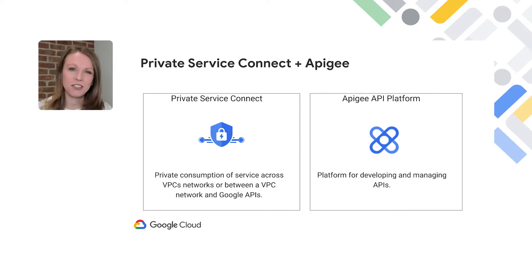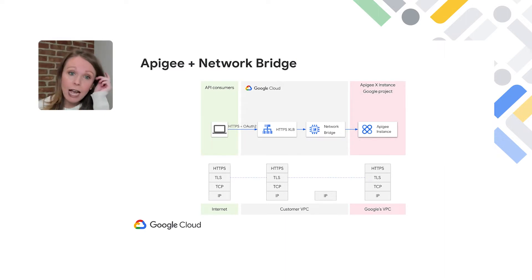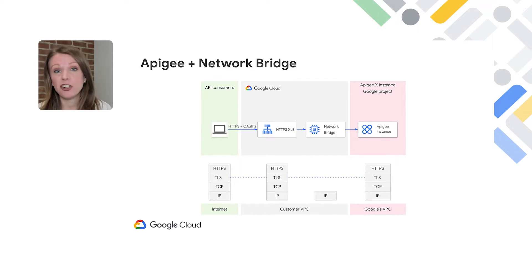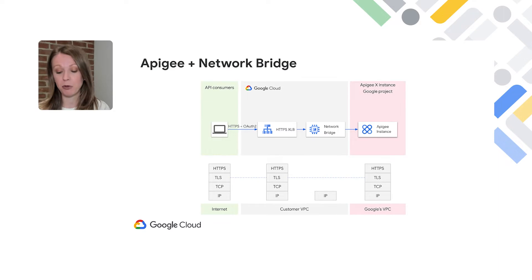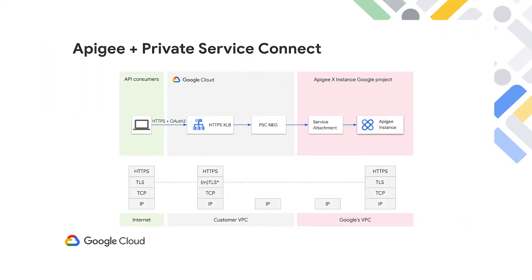The Apigee runtime runs in a Google-managed VPC that can be peered with a customer VPC. Traditionally, a network bridge provisioned along with a load balancer in the customer VPC was required to communicate with Apigee. But now you can use Private Service Connect, or PSC, in the form of a PSC network endpoint group, or NEG, to connect to Apigee. In a northbound traffic pattern, Apigee is exposed outside of the Apigee tenant VPC through a service attachment.